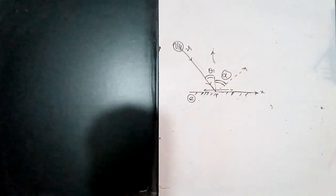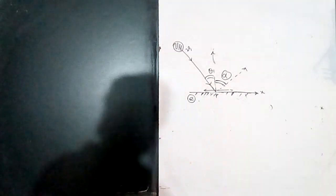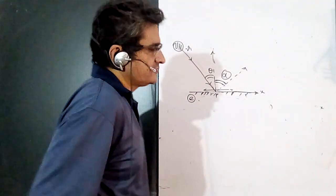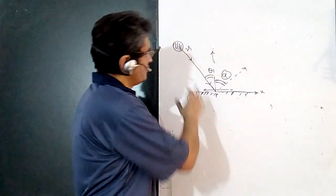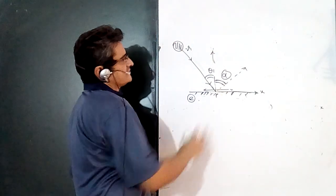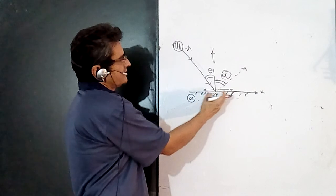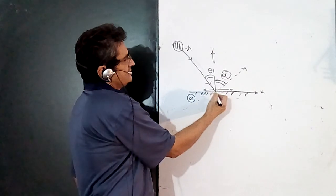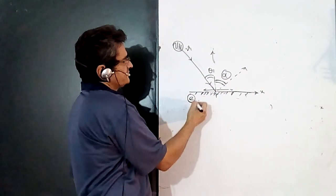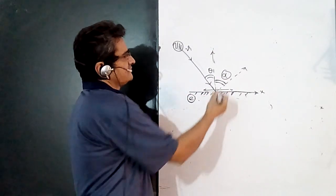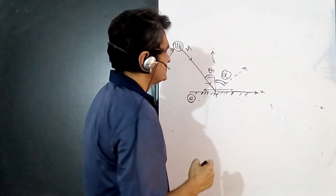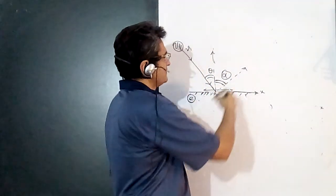In this lecture we will see how to use the formula of coefficient of restitution, especially in oblique collisions like this, where a ball is striking at an angle theta normal to the wall. Given the coefficient of restitution, we have to find the final angle alpha at which it will rebound back.